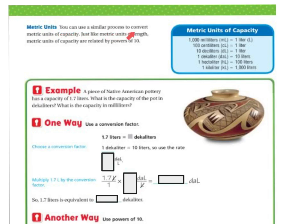Let's do metric units. You can use a similar process to convert metric units of capacity just like metric units of length. Metric units of capacity are related by powers of 10. So we've got 1,000 milliliters equals 1 liter, 100 centiliters equals 1 liter, 10 deciliters equals 1 liter, 1 decaliter equals 10 liters, 1 hectoliter equals 100 liters, and 1 kiloliter equals 1,000 liters. So you notice that they are powers of 10. I'm either multiplying powers of 10 or dividing powers of 10.